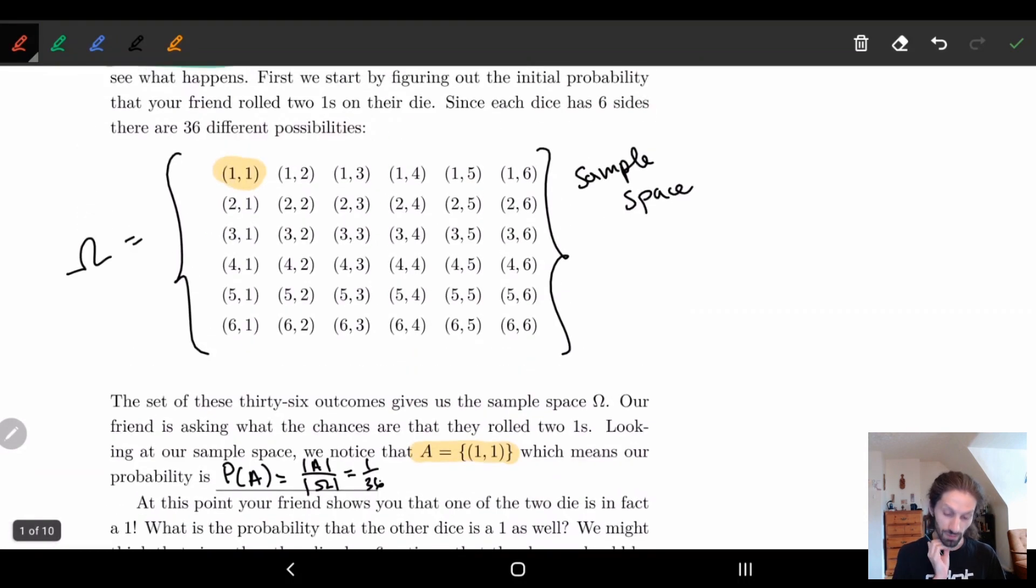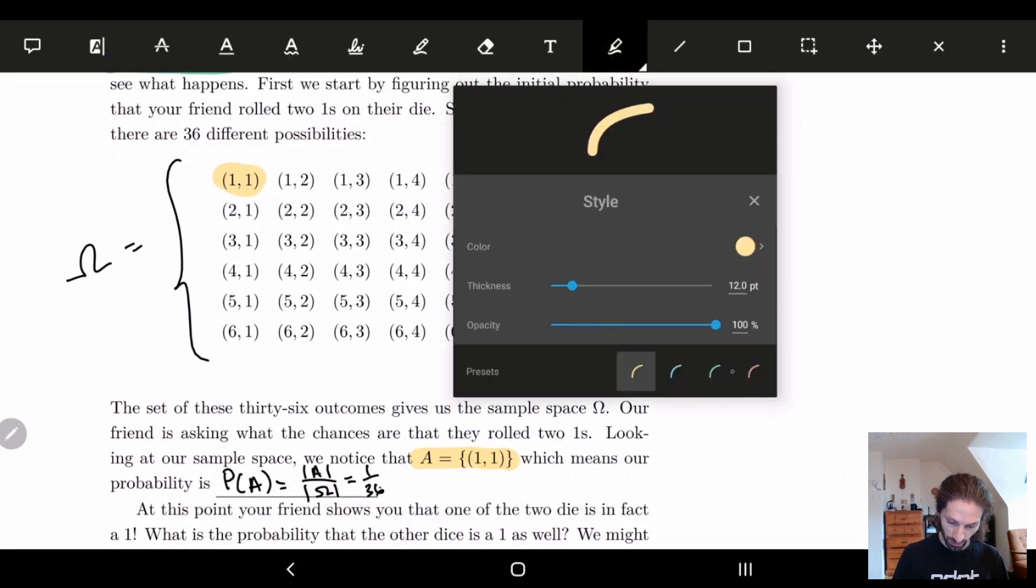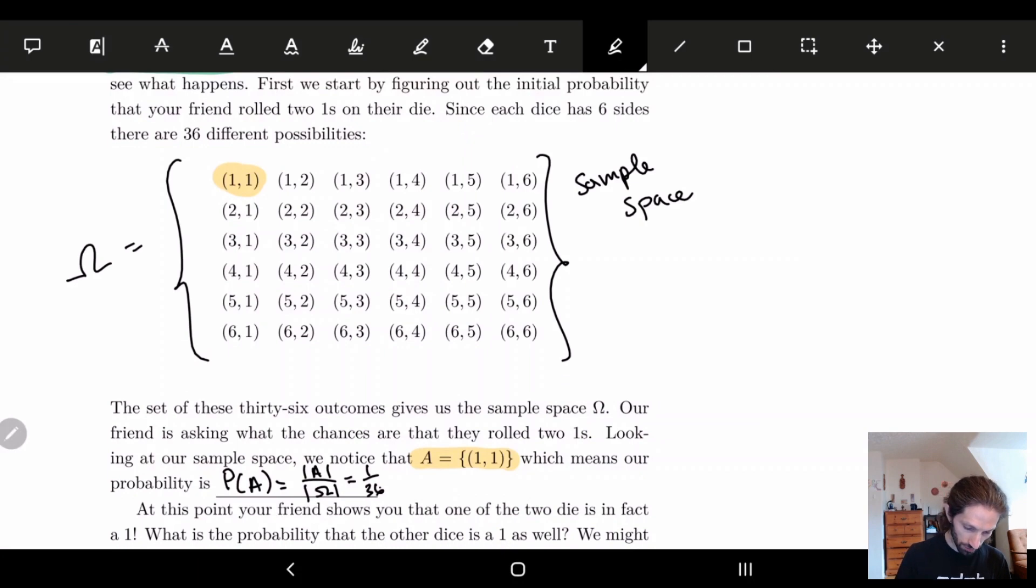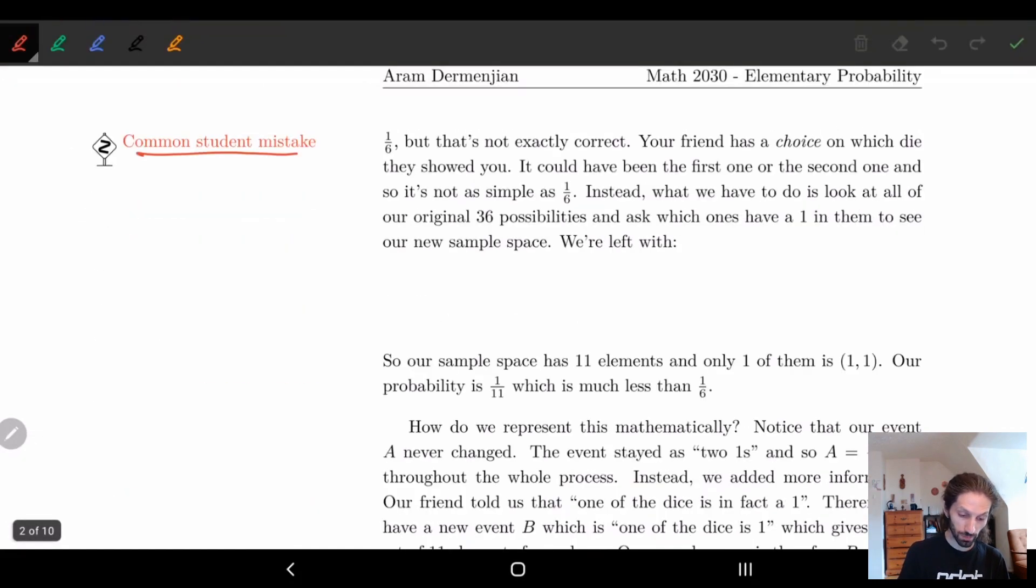And actually let's look at this in the sample space. So if we look at the sample space, which ones have a one in them? So if we look at all of these, all of these have ones in the second component, and all of these have ones in the first component. Which means if it was any one of these, I guess 11 different options, then your friend could have chosen a one. So in other words we have a new sample space.